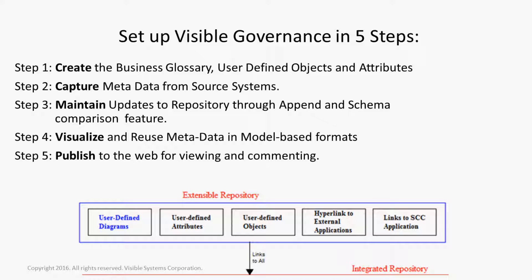Set up visible governance in five steps: 1. Create the business glossary using user-defined objects and attributes. 2. Capture metadata from the source systems. 3. Maintain updates to the repository through the append and schema comparison feature. 4. Visualize and reuse metadata in model-based formats. 5. Publish to the web for viewing and commenting.